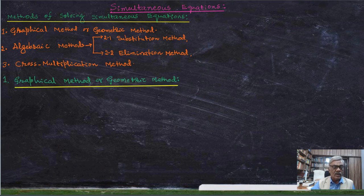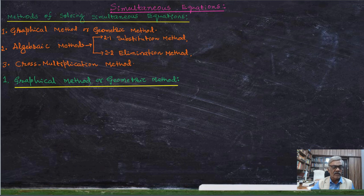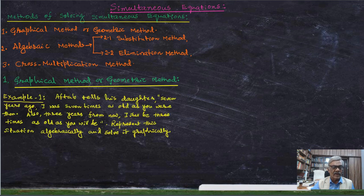Now we consider the graphical method, or geometric method. We have already come across the representation of a pair of linear equations in two variables on a coordinate axis as a pair of straight lines, while classifying simultaneous equations. We will start with an example here.